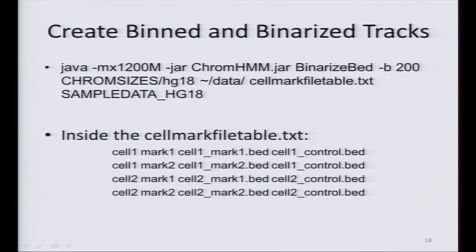Any questions on this first step? The question is: do I have to select a threshold when binarizing this data? Internally, ChromHMM selects a threshold for you based on a Poisson process. You don't have to specify any threshold — ChromHMM will do this calculation for you and you will automatically get the binarized tracks.